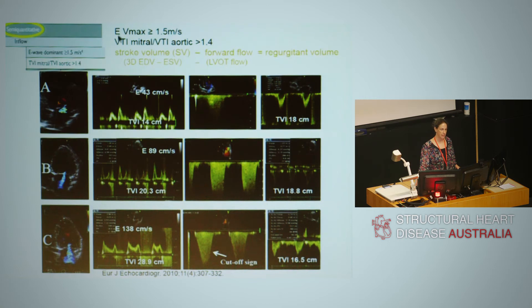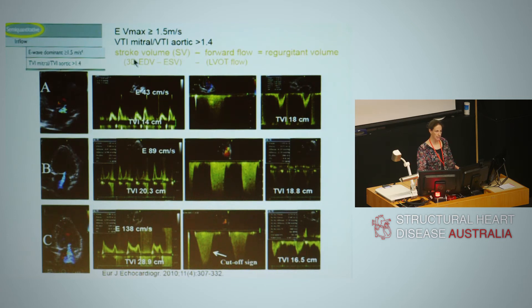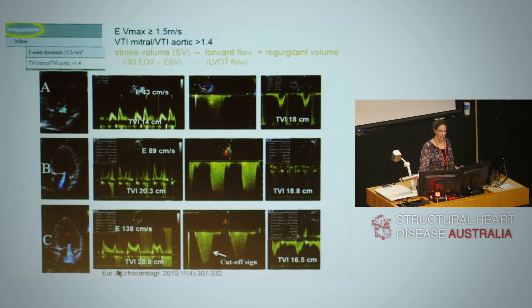For semi-quantitative assessment, we also look at E-velocity max — the maximal mitral inflow with pulse wave. As severity increases from mild to severe, the E wave becomes dominant, and we want an E-velocity max of more than 1.4–1.5 metres per second for severe MR. We should also look at the VTI of mitral inflow relative to VTI of the LV outflow tract forward flow — when this ratio is more than 1.4, it is consistent with severe mitral regurgitation.